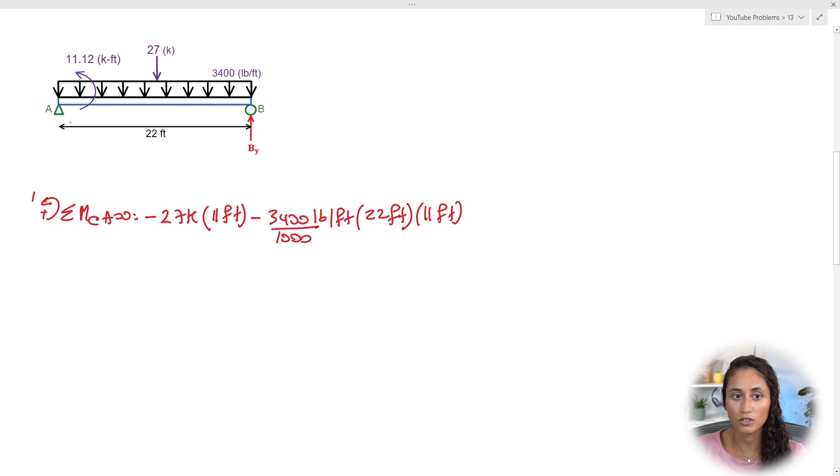So the moment here is counterclockwise and our positive moment is also going counterclockwise. So that's why here we're going to have plus and it's going to be 11.12 kips·foot. Now remember this is a moment and this is a moment equation. So we don't need to multiply this by anything else.